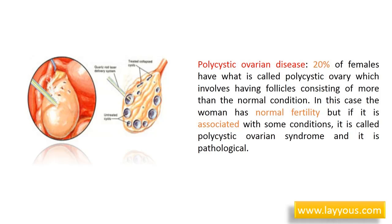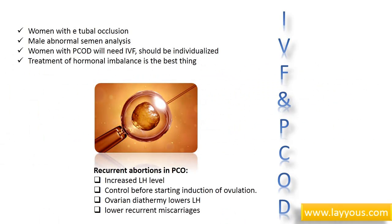IVF was first done for women who have tubal occlusion or abnormal male semen analysis, but the decision whether women with PCOD will need IVF should be individualized. For hirsutism, treatment for women seeking pregnancy differs from those who are not; most of the time treatment of hormonal imbalance is best. Regarding recurrent abortions in PCO patients, it occurs due to a slightly increased LH level, so medications to manage LH level are recommended before starting induction of ovulation. Ovarian diathermy has also been shown to lower LH levels and reduce the incidence of recurrent miscarriages.